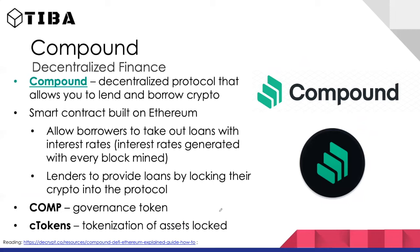Compound is another decentralized lending and borrowing protocol on Ethereum. Borrowers take out loans and pay interest; lenders provide loans and earn interest from borrowers. There are two tokens: COMP, the governance token, and cTokens, which represent the assets you lock into the smart contract.